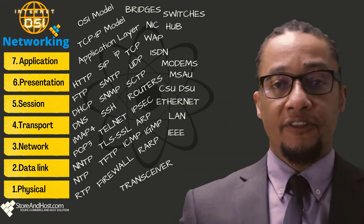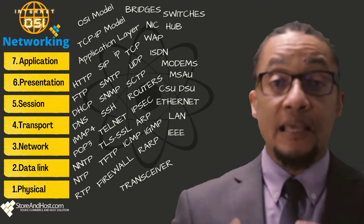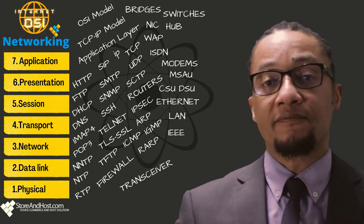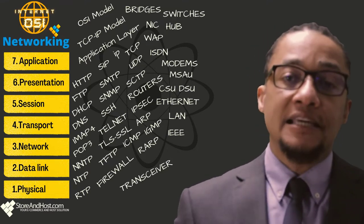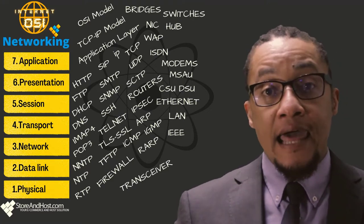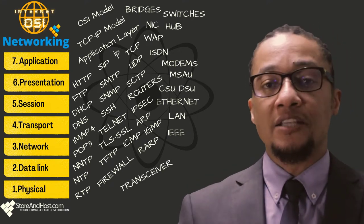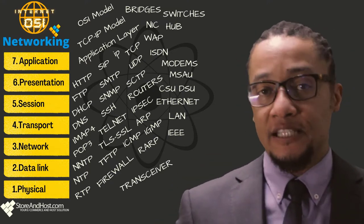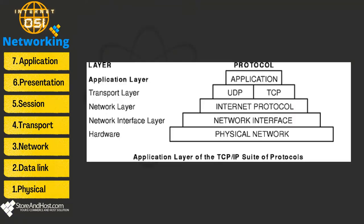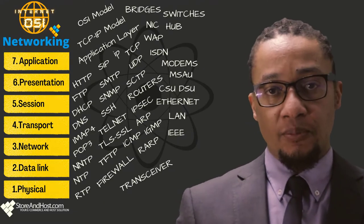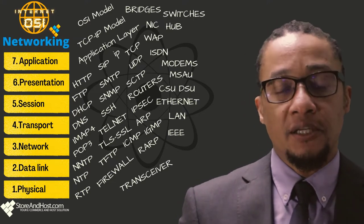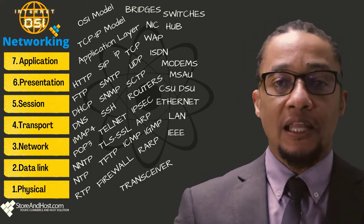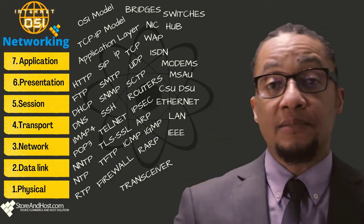In TCP/IP, the application layer is the topmost layer and is present above the transport layer. It defines TCP/IP application protocols and how host programs interface with transport layer services to use the network. The application layer includes all higher-level protocols like DNS (Domain Name System), HTTP (Hypertext Transfer Protocol), Telnet, SSH (Secure Shell), FTP (File Transfer Protocol), TFTP, SNMP, SMTP, DHCP, X Windows, and RDP (Remote Desktop Protocol).